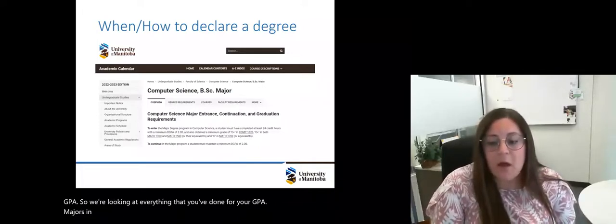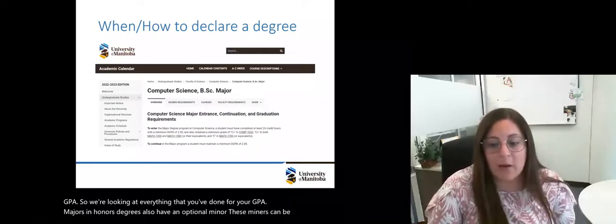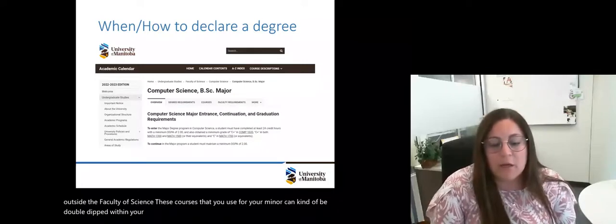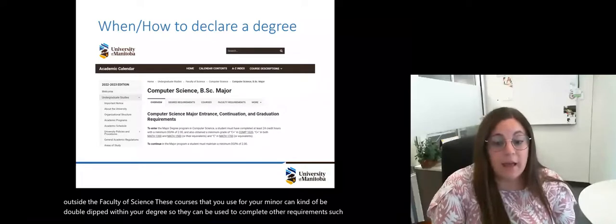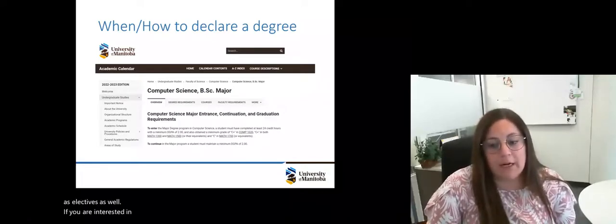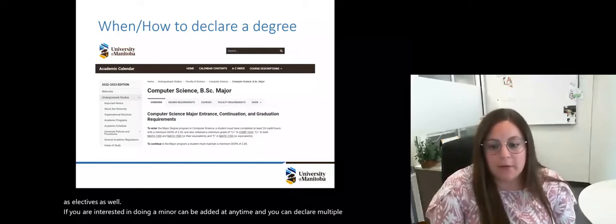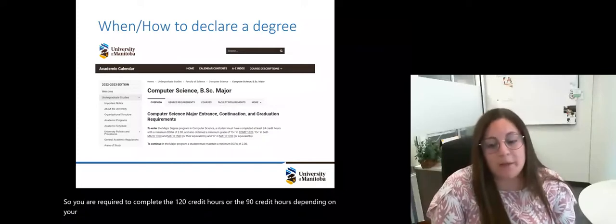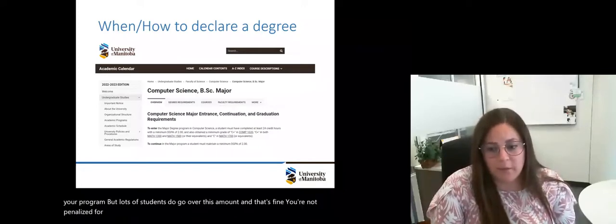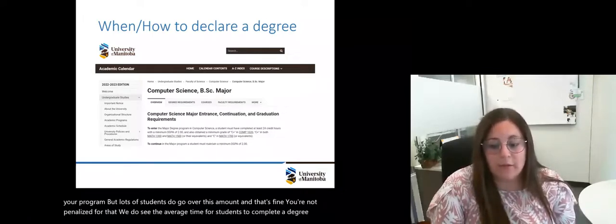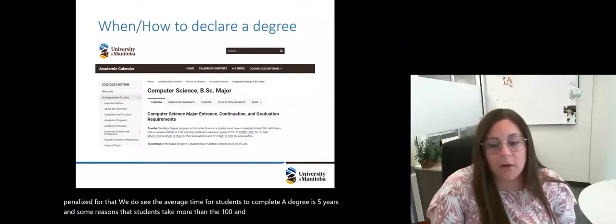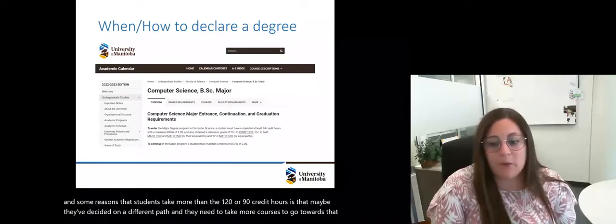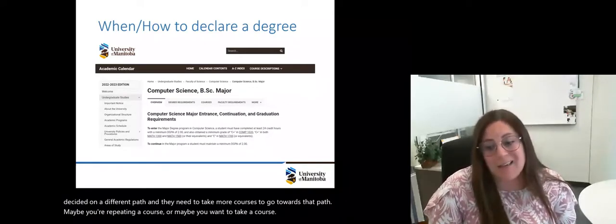Majors and honors degrees also have an optional minor. These minors can be from inside or outside the Faculty of Science. These courses that you use for your minor can be double dipped within your degree. So they can be used to complete other requirements such as electives as well. If you aren't interested in doing a minor, it can be added at any time and you can declare multiple minors. You are required to complete the 120 credit hours or the 90 credit hours, depending on your program, but lots of students do go over this amount. Some reasons that students take more than the 120 or 90 credit hours is that maybe they've decided on a different path, maybe you're repeating a course or maybe you want to take a course for interest.